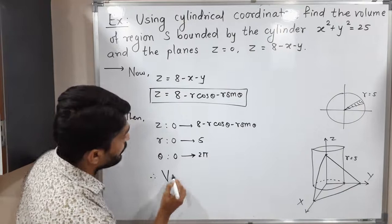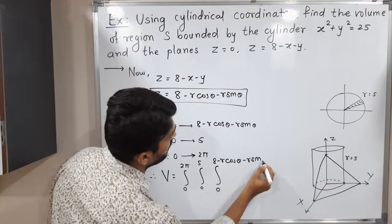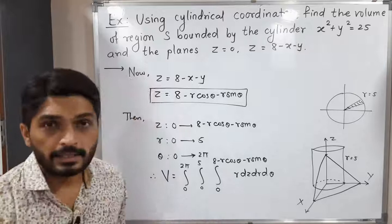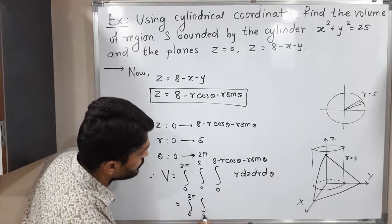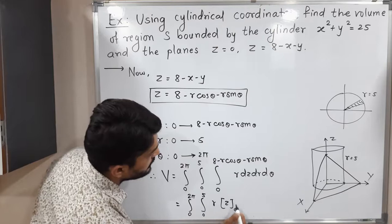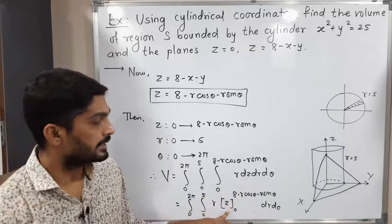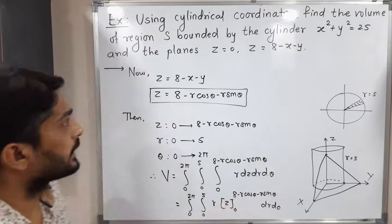The volume formula becomes: outer integral over θ from 0 to 2π, middle integral over r from 0 to 5, inner integral over z from 0 to 8 − r cosθ − r sinθ, with integrand r dz dr dθ. We solve the inner integral with respect to z first. Since r is constant, we take it outside: integral of dz from 0 to 8 − r cosθ − r sinθ equals 8 − r cosθ − r sinθ. The lower limit is 0, so we only need the upper limit.